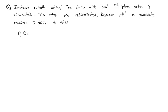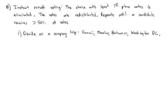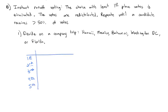To set up an example, let's say we're trying to decide on a company trip. The choices are Hawaii, Mexico, the Bahamas, Washington D.C., or Florida. We conduct an election with first through fifth preferences. Three people voted: Mexico, Bahamas, Hawaii, Washington D.C., Florida. Four people voted: Bahamas, Hawaii, Washington, Mexico, Florida. Four people voted: Mexico, Washington, Bahamas, Hawaii, Florida.